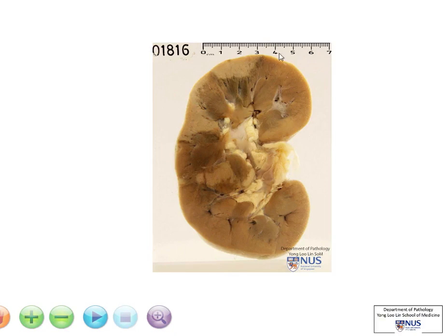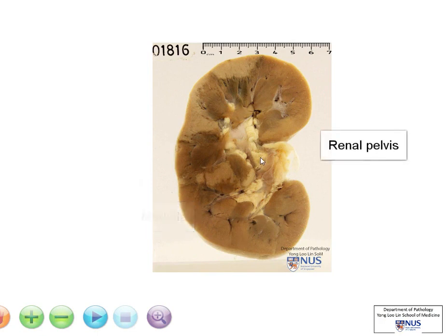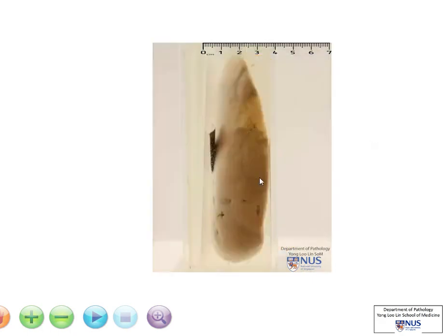Hello, we're looking at a bisected kidney here. This is the renal cortex, the medulla, and the renal pelvis, and the yellowish areas here are adipose tissue.